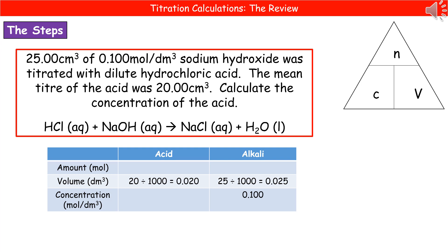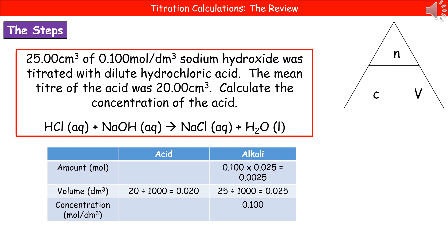We know the two volumes, but they're in centimetres cubed, so divide them by a thousand to give them in decimetres cubed, and write them into the right boxes on the table. We can then write down our concentration from the question — that's three boxes out of six already filled in. For our alkali, the amount box is blank, so using our formula, concentration times volume: 0.1 times 0.025 gives us 0.0025 moles.